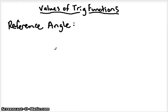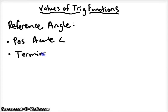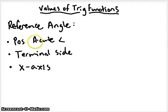In this video I'm going to show you how to find values of trig functions, specifically ones that we can use a reference angle to help us. So the first thing we want to do is define a reference angle. A reference angle is a positive acute angle, and it's always formed by the terminal side and the x-axis.